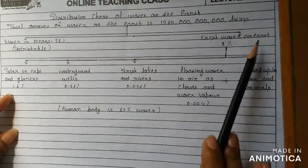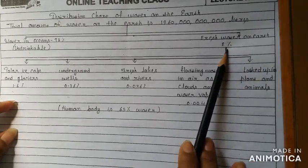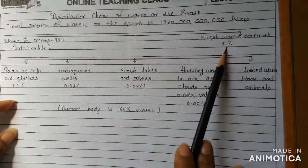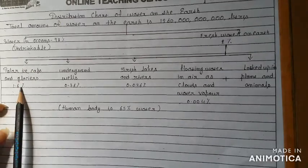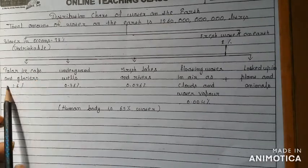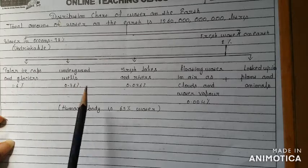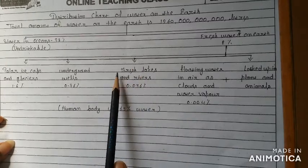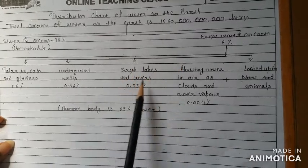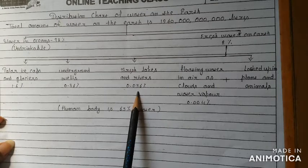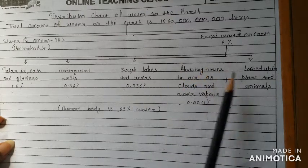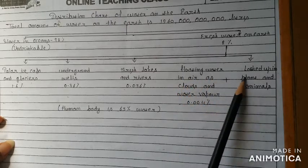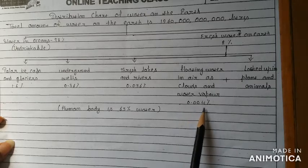The second part is fresh water on earth, which is 2%. This 2% is further divided: 1.6% is in polar ice caps and glaciers, 0.36% is in underground wells, 0.036% is in fresh lakes and rivers, and the remaining 0.04% is floating water in air as clouds and water vapor, and locked in plants and animals.